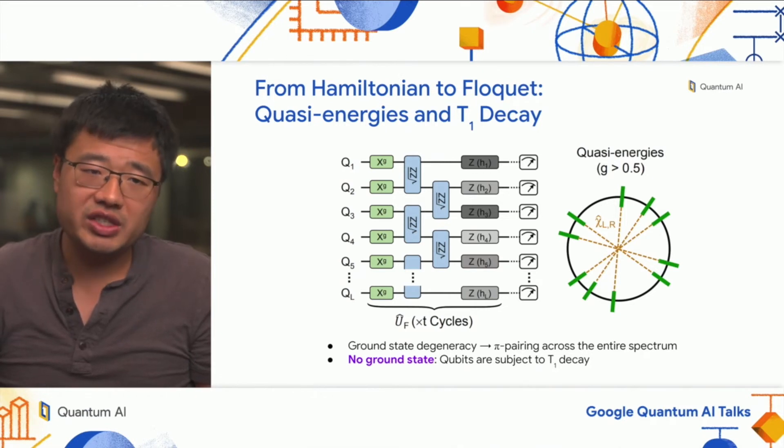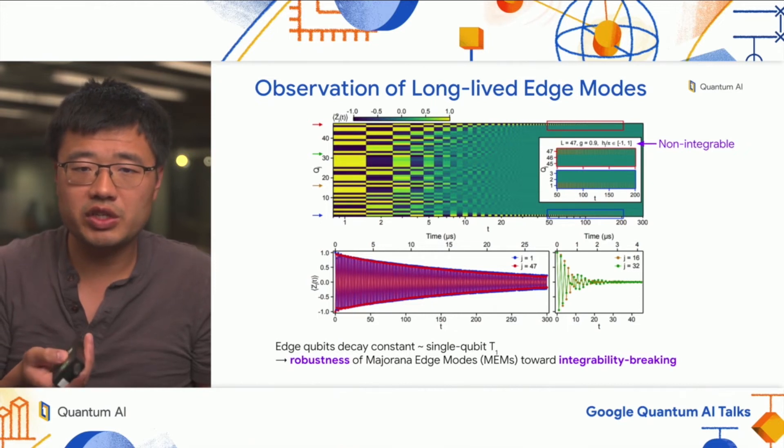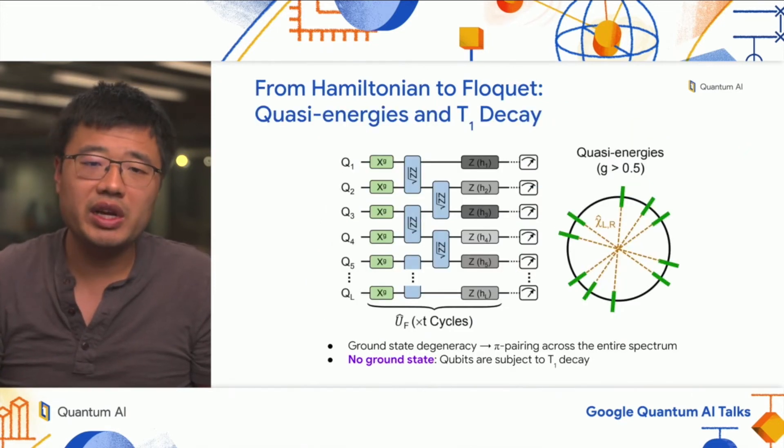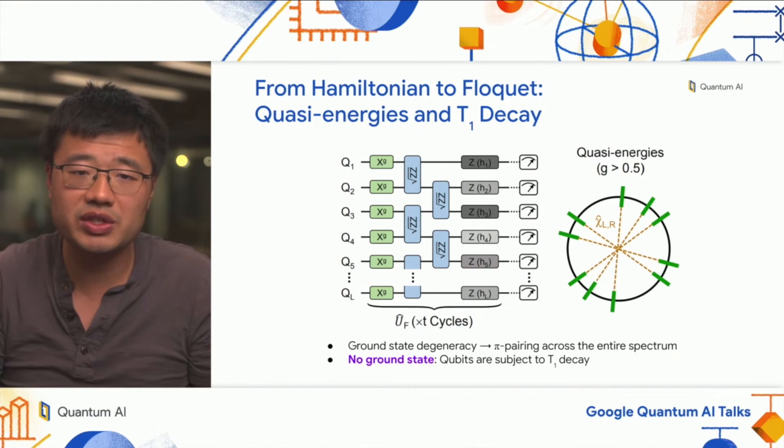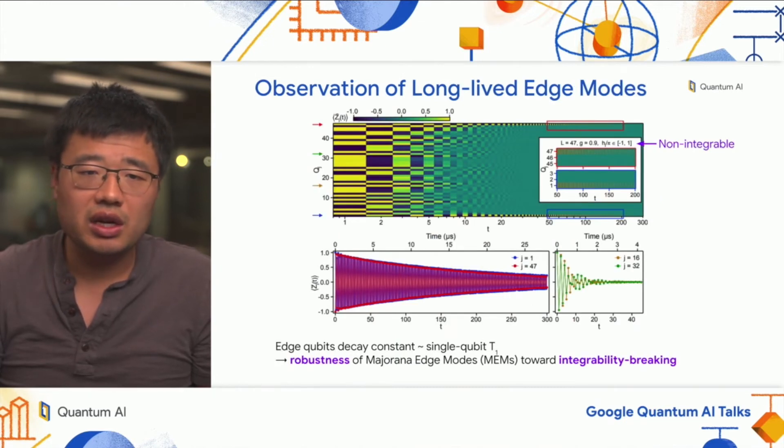Nevertheless, with these challenges in mind, we still march ahead and try to see what really happens when you realize these modes in our system. Here's the experimental data where we took this quantum circuit, which realized a form of kicked Ising model. You have a layer of transverse X pulses, followed by a layer of ZZ interactions, followed by a layer of local Z field. You run this on a quantum processor—here we use 47 qubits—and measure local observable sigma Z.